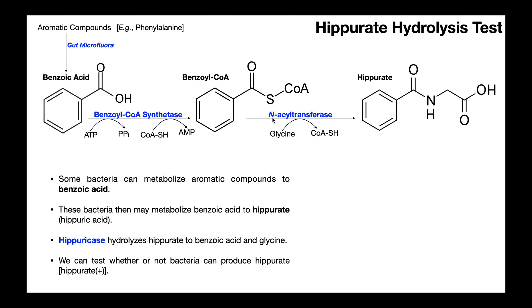Then there's an enzyme called N-acyltransferase, which effectively swaps out the coenzyme A for glycine. And that generates the molecule called Hippurate.